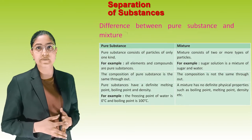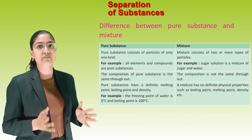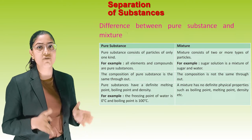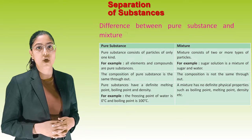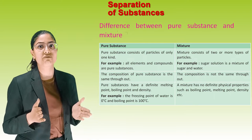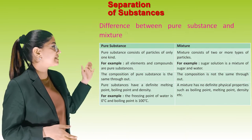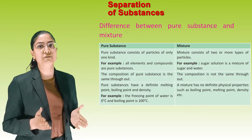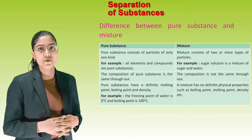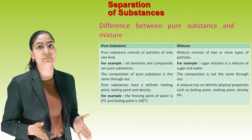Difference between pure substance and mixture: A pure substance consists of particles of only one kind — for example, all elements and compounds are pure substances. The composition of a pure substance is the same throughout, and it has a definite melting point, boiling point, and density. For example, the freezing point of water is 0°C and boiling point is 100°C. A mixture consists of two or more types of particles — for example, sugar solution is a mixture of sugar and water. Its composition is not the same throughout, and it has no definite physical properties such as boiling point, melting point, or density.